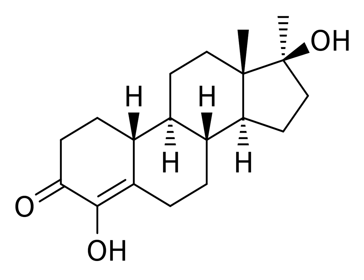Methylhydroxynandrolone, MON, MHN, also known as 4-hydroxy-17-alpha-methyl-19-nortestosterone, as well as 4,17-beta-dihydroxy-17-alpha-methylestr-4-en-3-one, is a synthetic, orally active anabolic androgenic steroid and a 17-alpha-alkylated derivative of nandrolone (19-nortestosterone), which was never marketed.